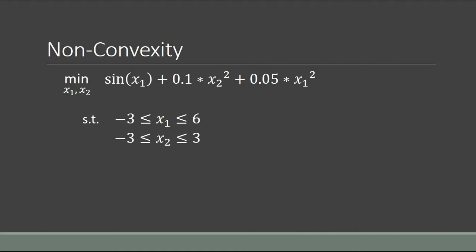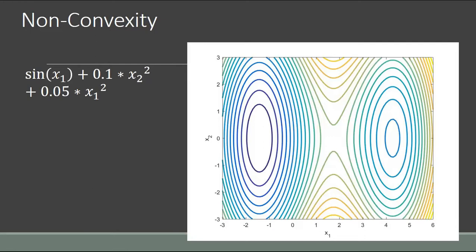One other issue to keep in mind with nonlinear programming problems is that they can demonstrate something called non-convexity. If we take our same objective function and expand the space we're looking at on x1, this sine function is going to cause some oscillatory behavior. Here's how it looks — our objective function now shows in this particular window that we're actually seeing two minima; these are now local minima, and they're not equal — one is going to be lower in value than the other.